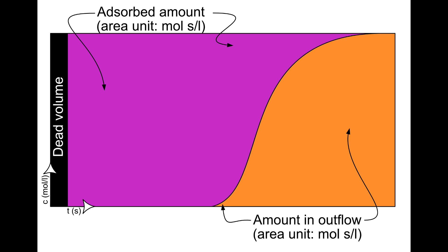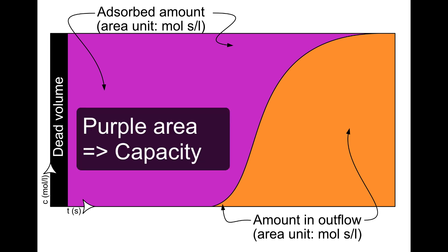The capacity of the column — that is, the amount of substance the column can absorb, given the operating conditions for which the breakthrough curve was made — is given by the area above the entire breakthrough curve. The capacity is thus given by the purple area in this figure. We can multiply this area with a flow rate in liter per second to get to amounts in moles.